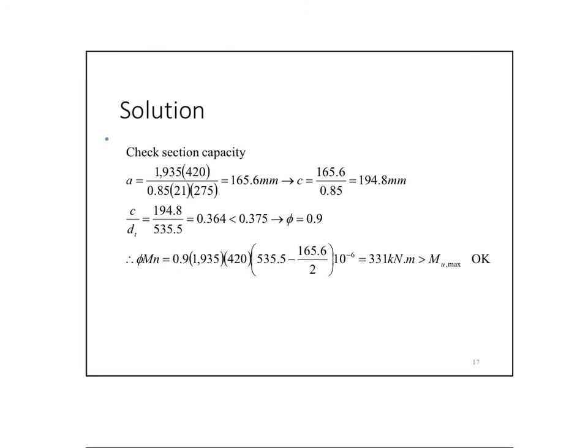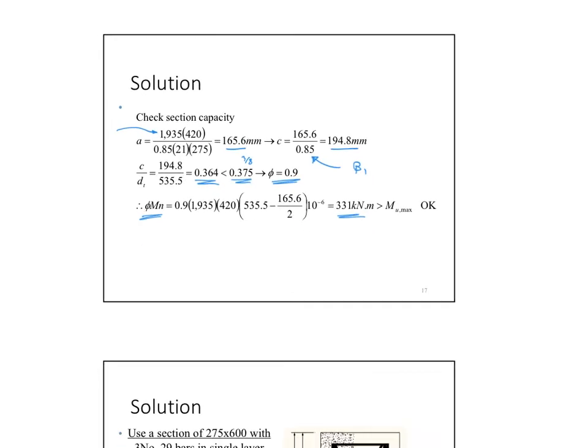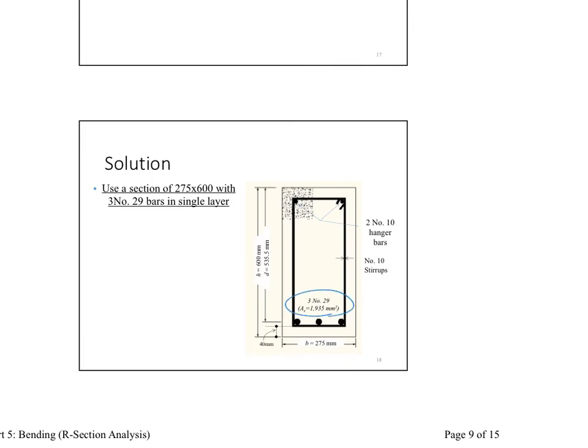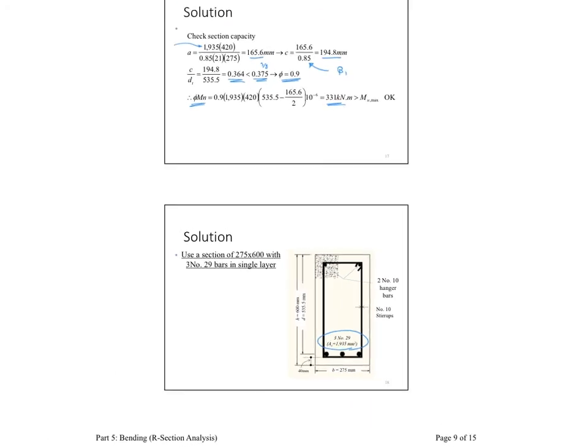Now, the last thing is to calculate my phi mn. Why do I have to recalculate it? Simply because my area steel is not the updated one. So, plug in the area steel that we got and then find your A, your C based on beta 1. And then find C over dt equals this. Less than that, then my phi equals 0.9. If it is less than 3 eighths, then your phi equals 0.9. Remember the three equations. Find your phi mn equals 338 bigger than mu. Then you're good with your design. Now, the final design has a three bars number 29. Okay? So, the three bars number 29, we're able to take the applied loads.